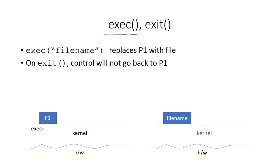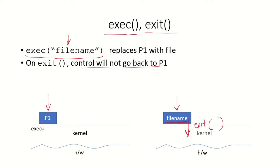Now consider exec and exit together. Suppose process P1 calls exec with a file name — P1 has been replaced by that file's process. If that process then exits, control does not go back to P1, because P1 is not the parent of this new process. P1 has been replaced by the file name process and no longer exists, so when the file name process exits it does not return a status to P1.